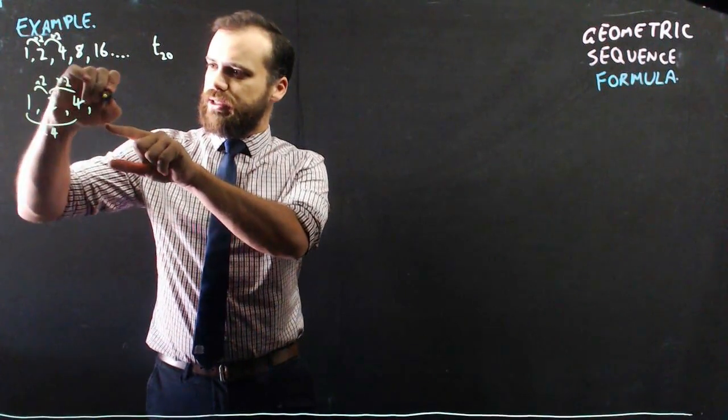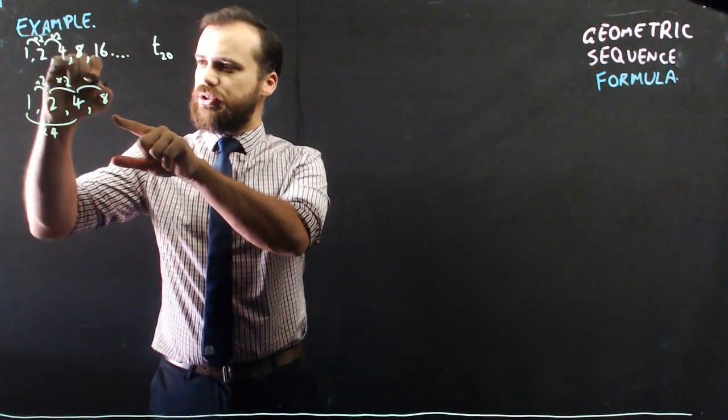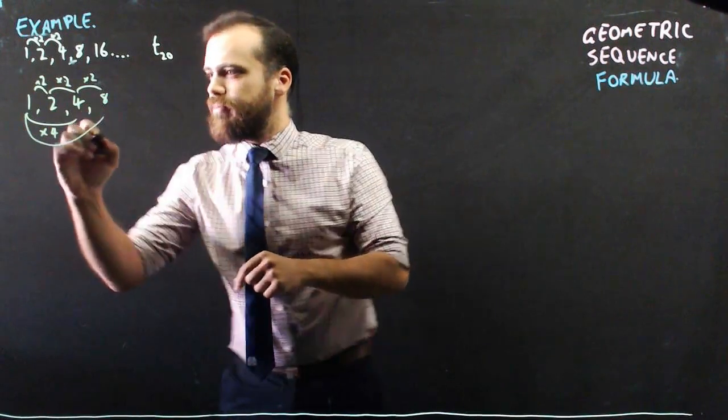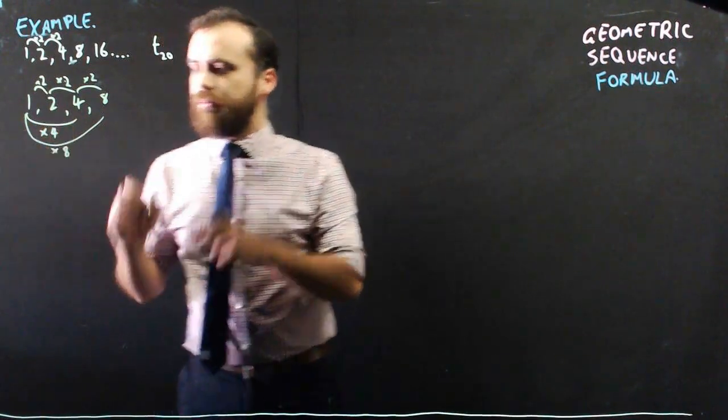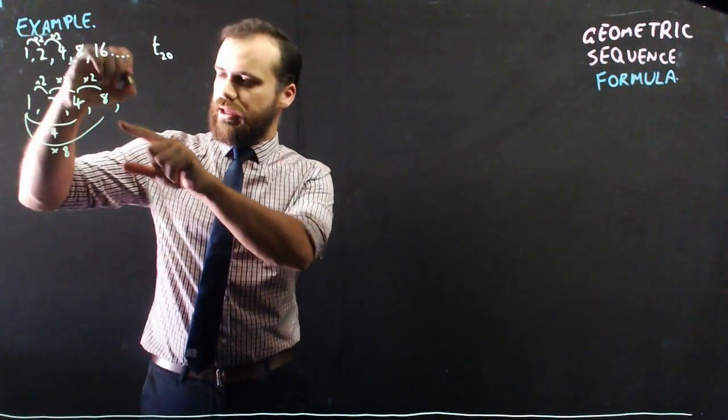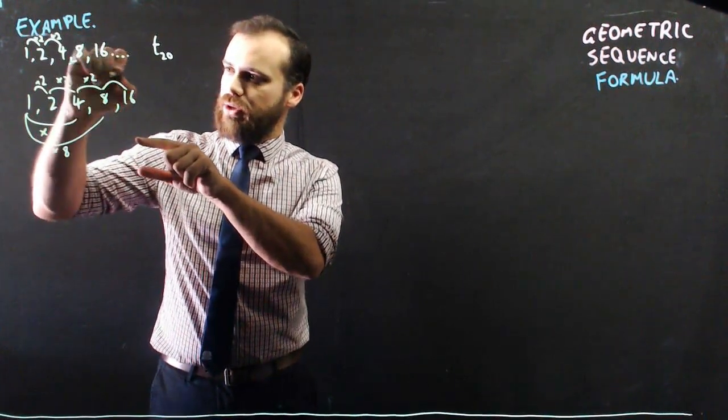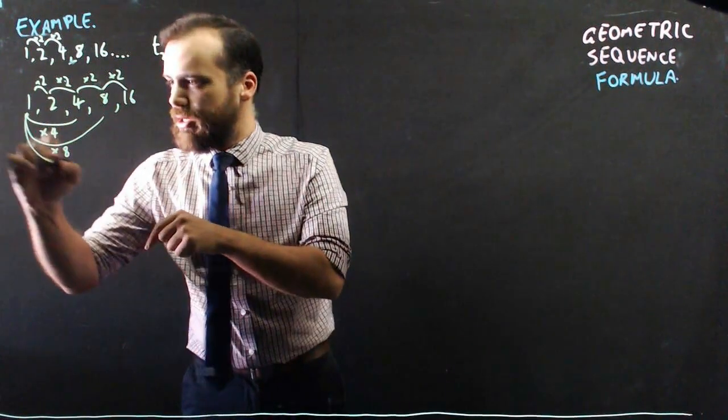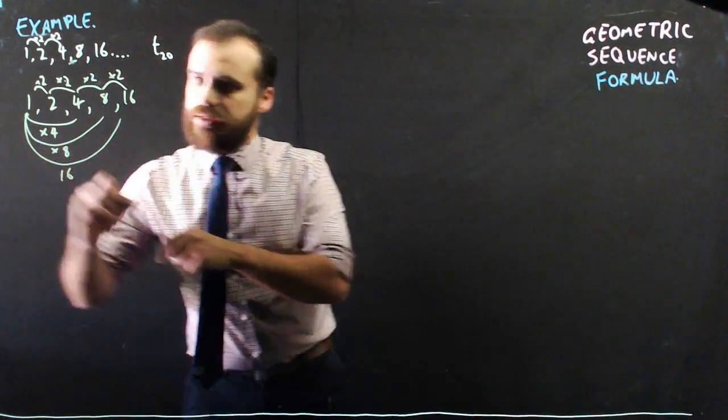If I want to get to the next one, I'm multiplying by 2 again, which is the same as multiplying by 8. And if I want to get to the next one, I'm multiplying by 2 again, and 2 times 2 times 2 times 2 is 16.